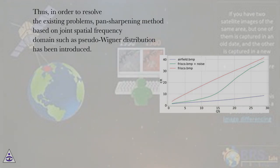Thus, in order to resolve the existing problems, pan-sharpening method based on joint spatial frequency domains such as pseudo-Wigner distribution has been introduced.